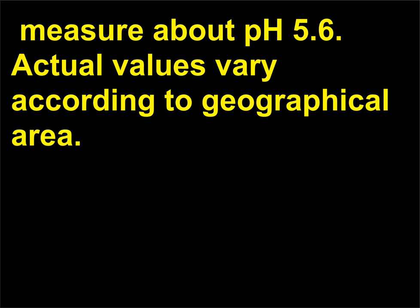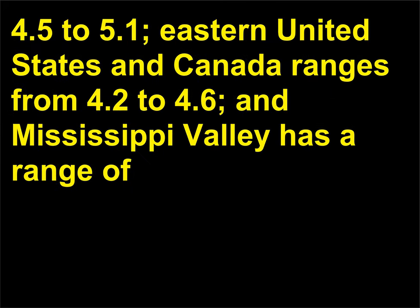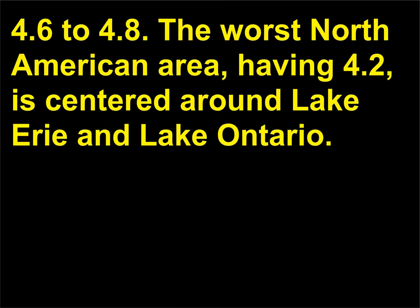Actual values vary according to geographical area. Eastern Europe and parts of Scandinavia have an average rain pH of 4.3 to 4.5; the rest of Europe is 4.5 to 5.1; Eastern United States and Canada ranges from 4.2 to 4.6; and Mississippi Valley has a range of 4.6 to 4.8. The worst North American area, having a pH of 4.2, is centered around Lake Erie and Lake Ontario.